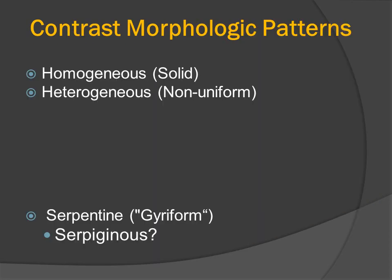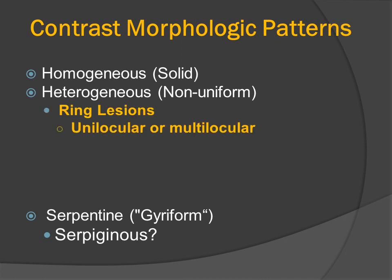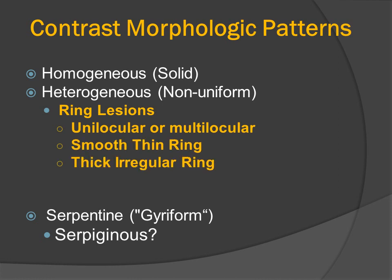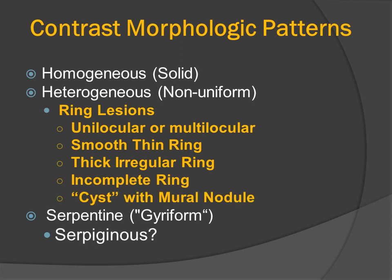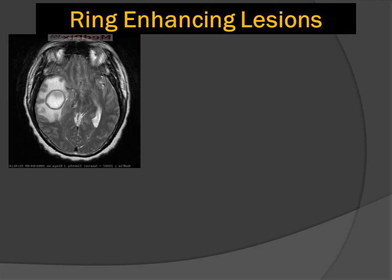There are many different patterns of contrast morphology. We can have homogeneous enhancement, heterogeneous enhancement, and superficial or serpentine enhancement. We can also have ring lesions. They may be unilocular or multilocular. They can be smooth and thin, thick and irregular. There can be an incomplete ring or rim of enhancement, and we can also have a cyst with a mural nodule.